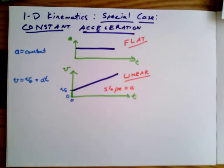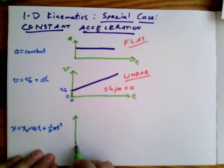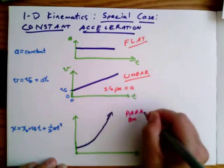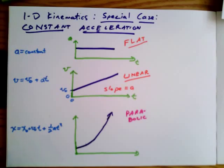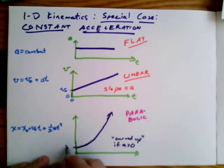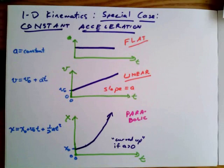Finally, the position is quadratic as a function of time — x naught plus v naught t plus one half a t squared — so plotting position as a function of time gives a parabolic function. The curvature tells you about the sign of the acceleration: if it's curved up that corresponds to positive acceleration, and if it's curved down it's negative. The intercept corresponds to the constant x naught. So we get three characteristic shapes of the kinematic plots: the acceleration is flat, the velocity is linear with slope a, and the position is quadratic with a curvature that indicates whether the acceleration is positive or negative.